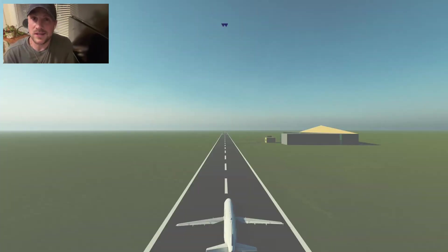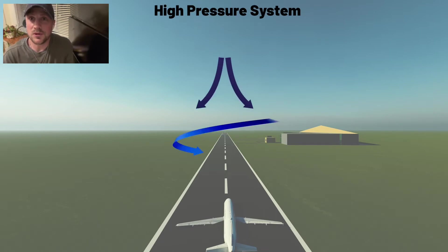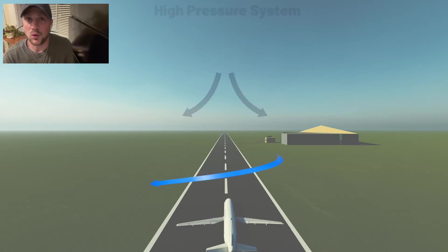A high pressure system sinks from the upper atmosphere, spins, and disperses outwards to a lower pressure area around it. Let's break it down.